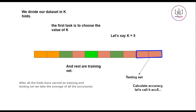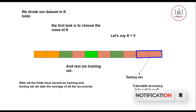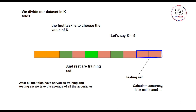So we have trained our model on each fold — each fold has served as both training and testing data. Our model has been trained on all the data points, so there is no question that can come out of syllabus. Now we calculate the accuracy of each iteration — ACC 1, ACC 2, ACC 3, ACC 4, ACC 5 — and we take the mean of all these accuracies. This is k-fold cross validation.